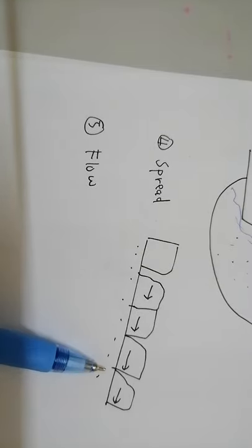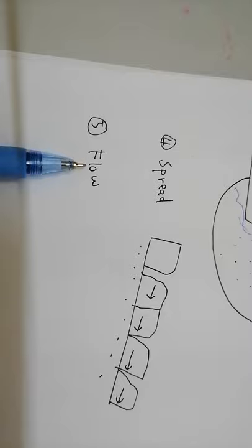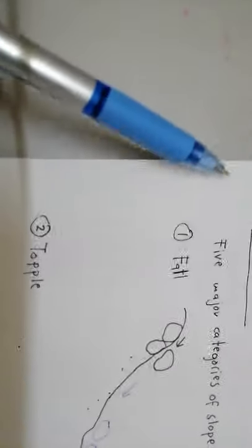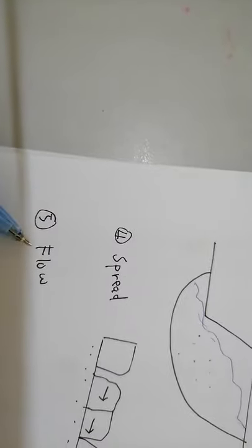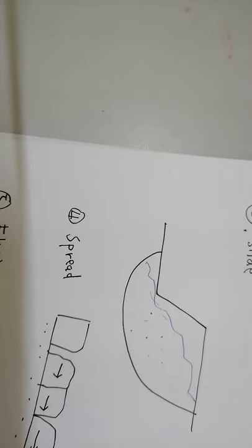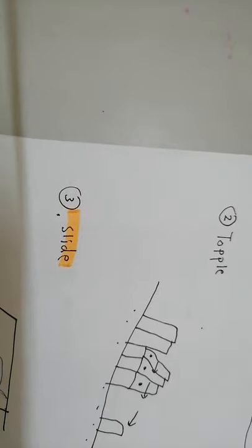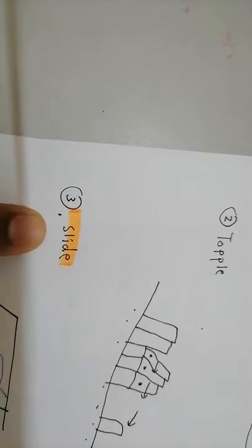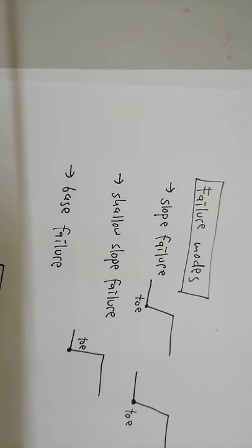And the fourth one is spread — dia spreading. And then the fifth one is flow, macam air mengalir. So, five major categories of slope failure: fall, topple, slide, spread, and flow. Dalam lecture session ini, we will focus on slide — kegagalan cerun melalui sliding.